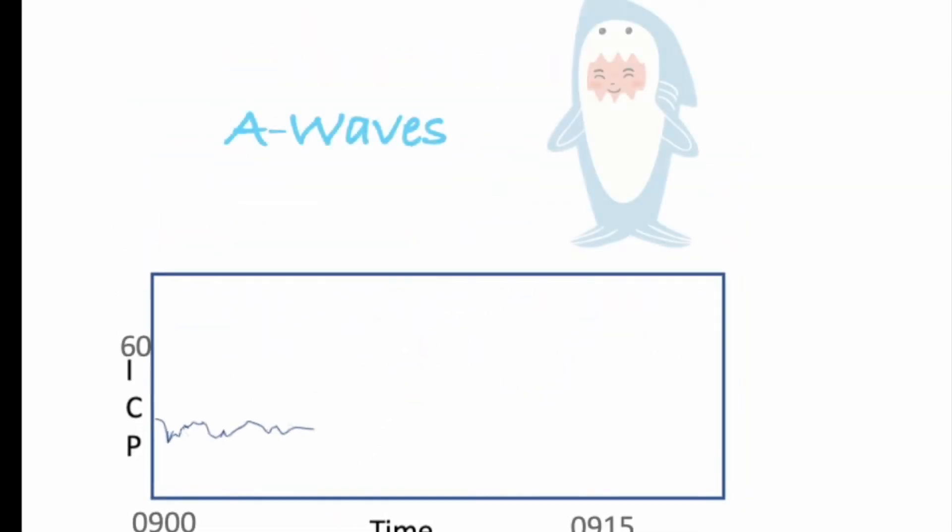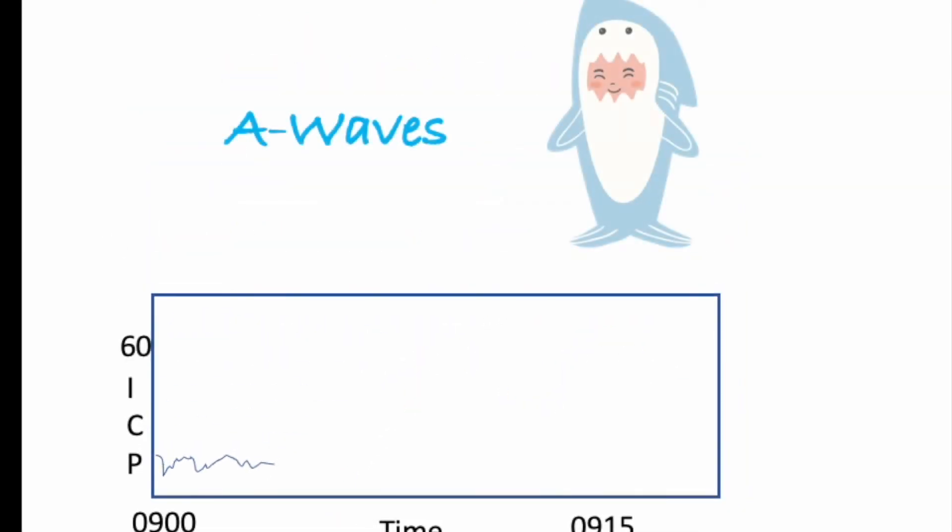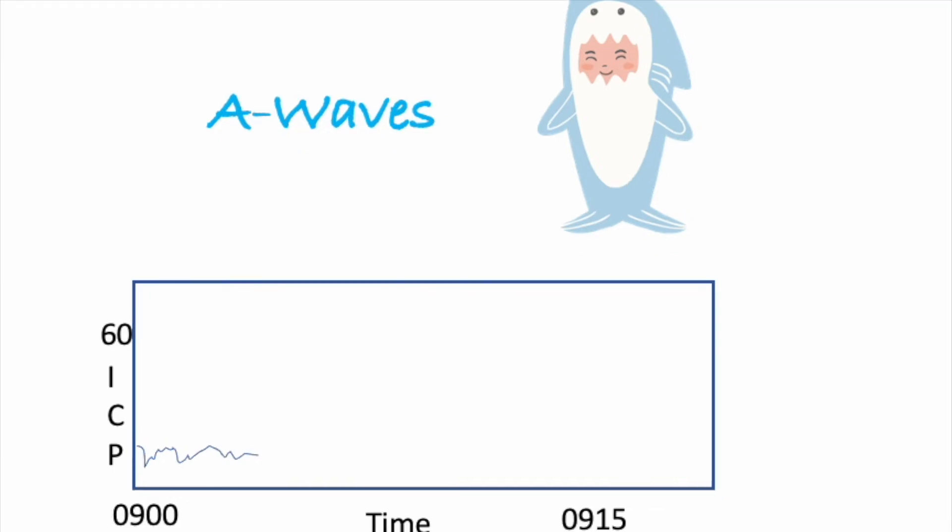Lastly, we'll go through some of the bad ICP waveforms you don't want to see. If you look at this graph, it's over a 15-minute period, and you can see the ICP gets all the way up to 60. A-waves are the worst. A-waves are awful. I say they're kind of like the VTAC, V-fib, where you're getting these intermediate runs of VTAC, V-fib.